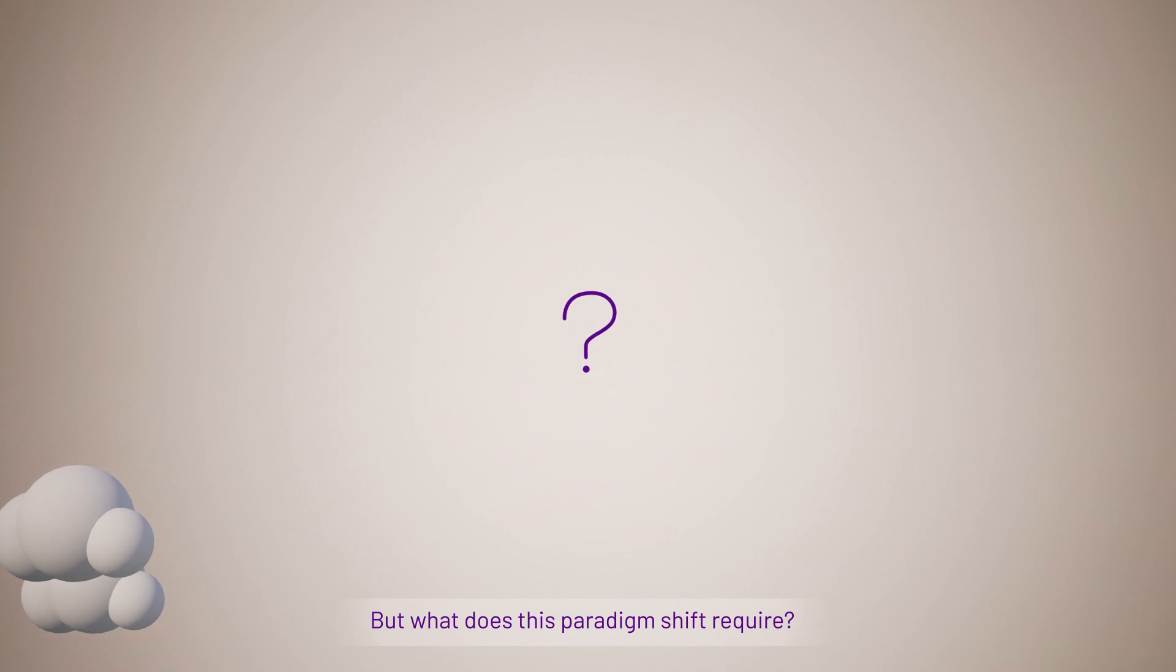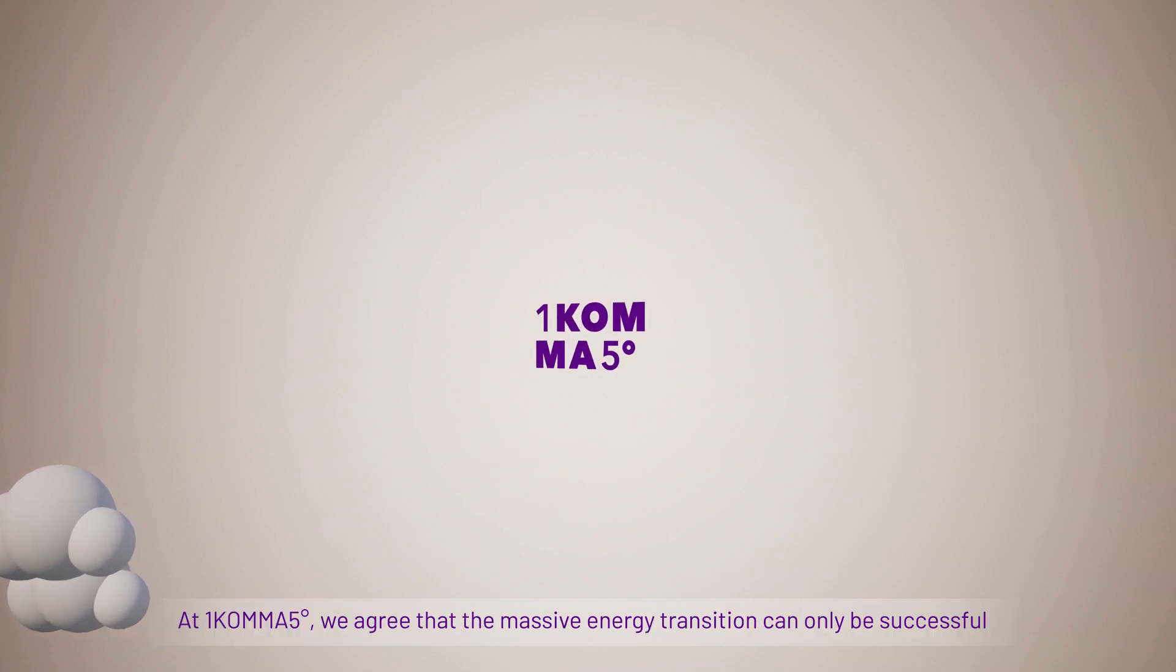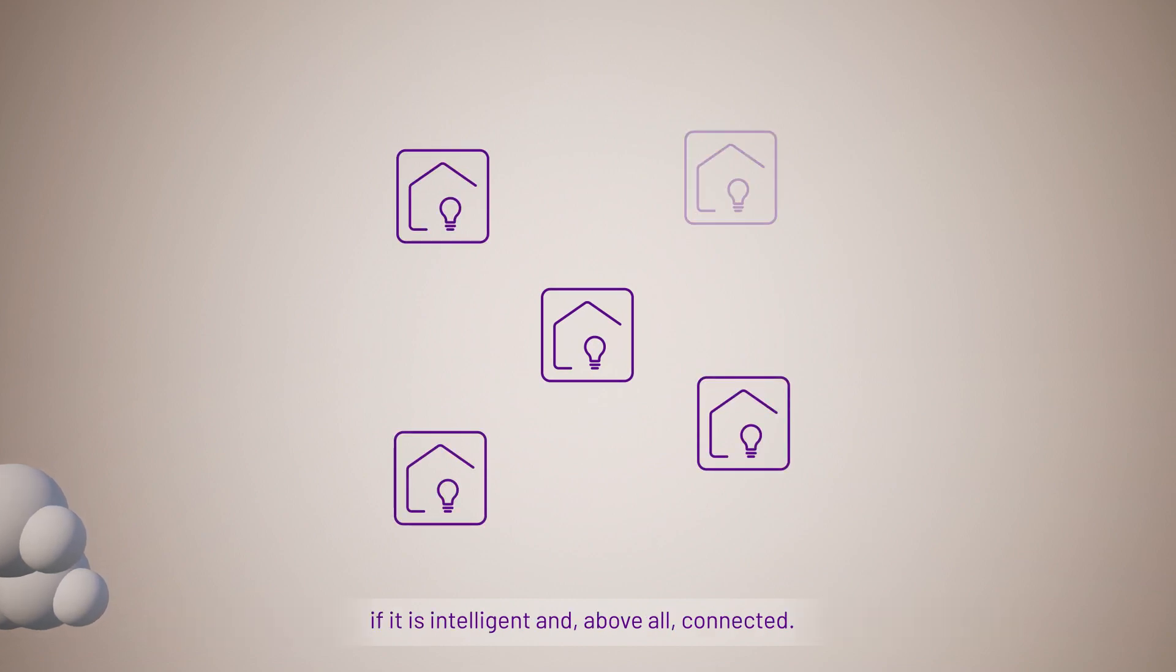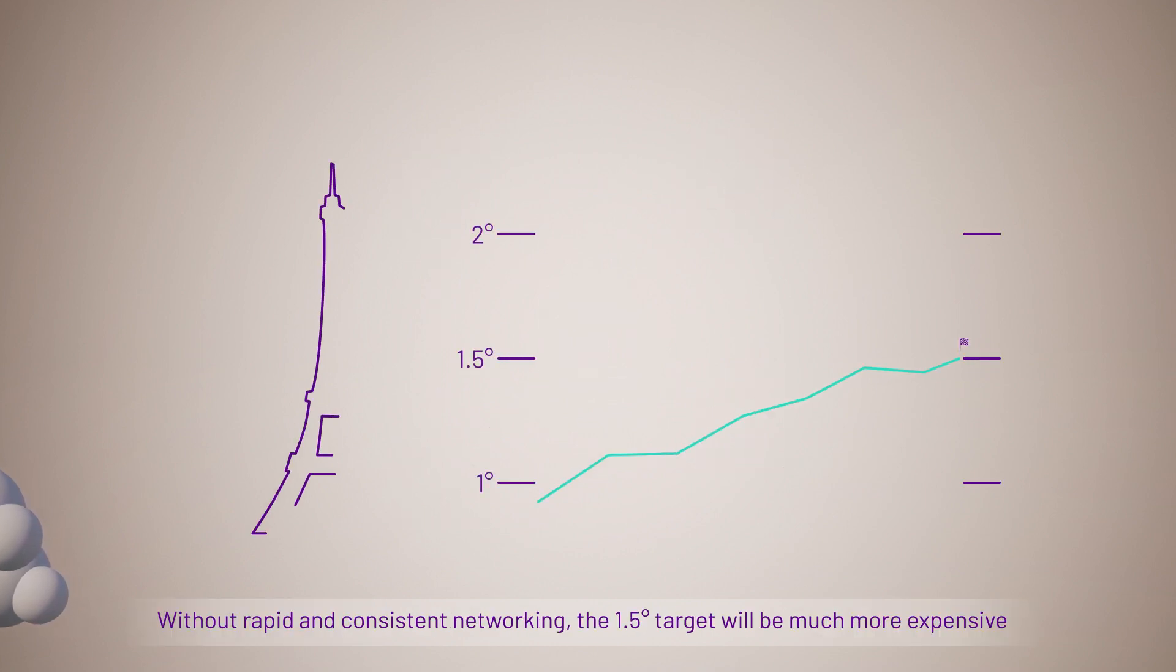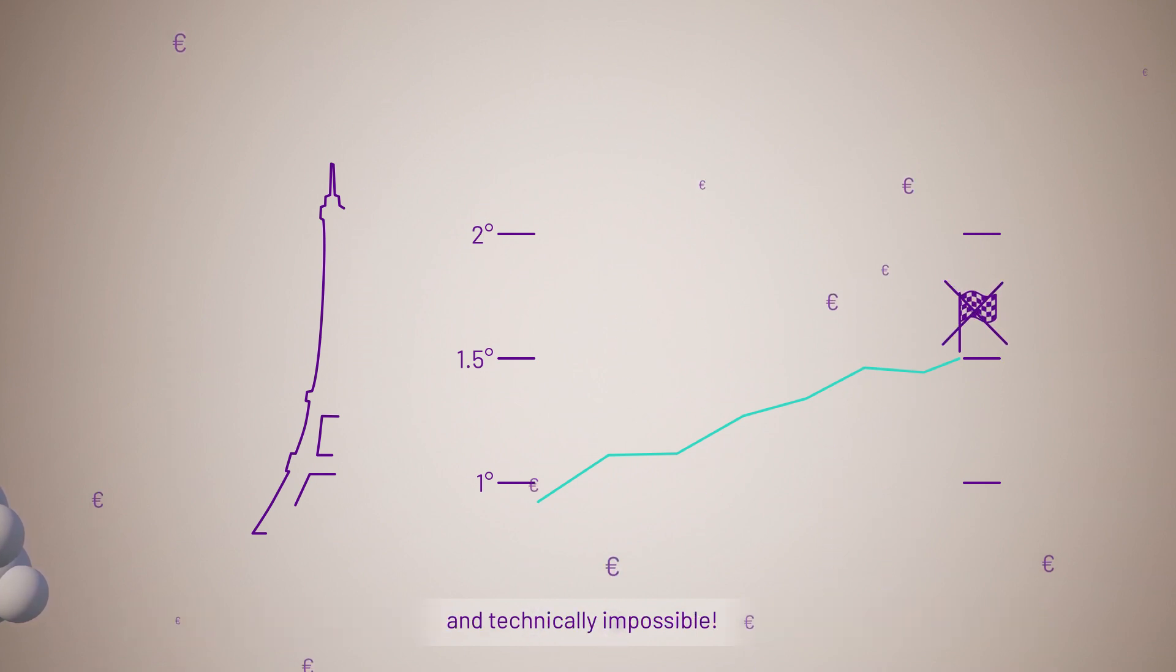But what does this paradigm shift require? At 1.5 we agree that the massive energy transition can only be successful if it is intelligent and, above all, connected. Without rapid and consistent networking, the 1.5 degree target will be much more expensive and technically impossible.